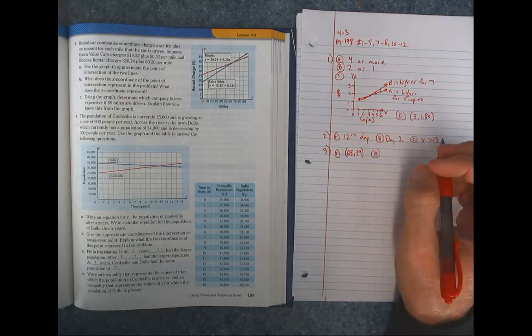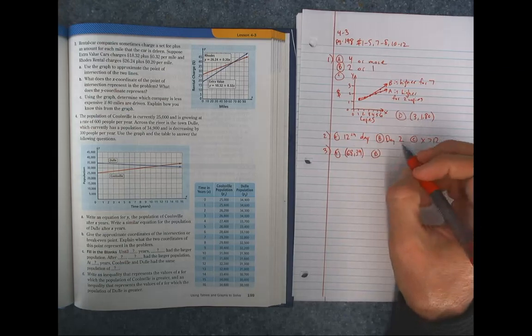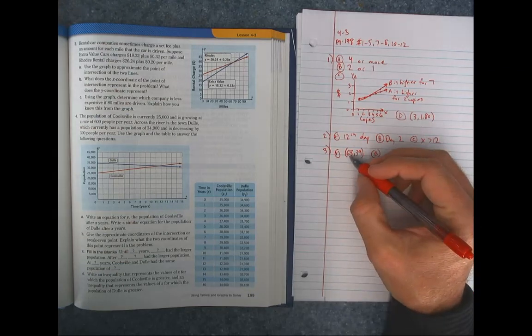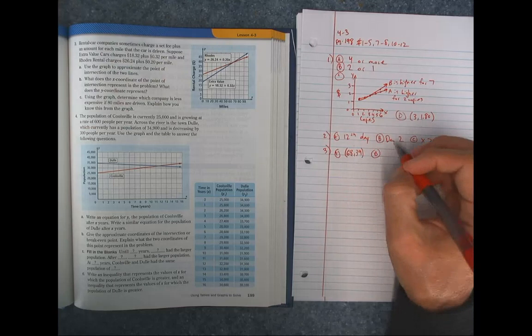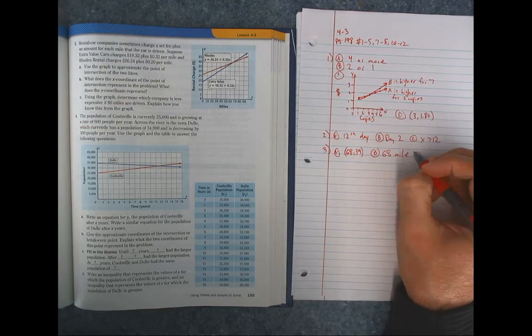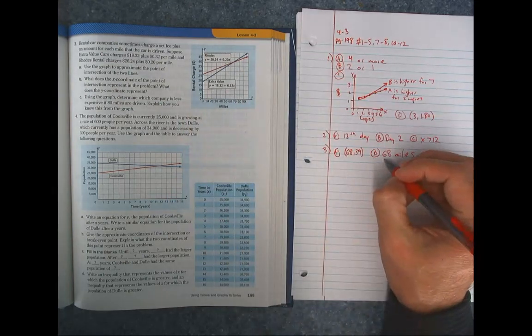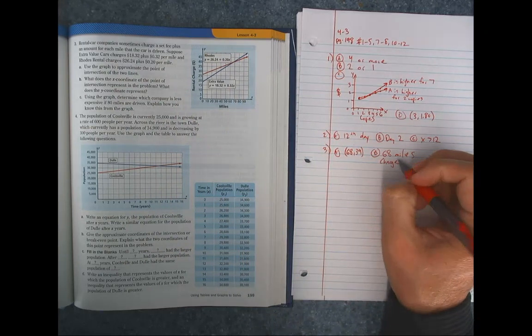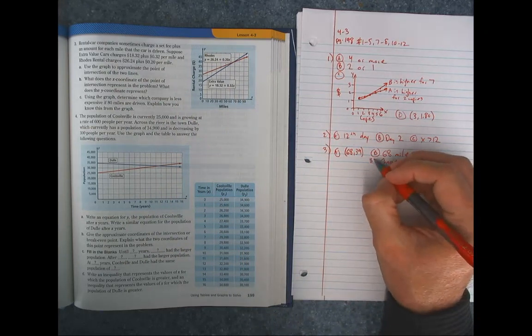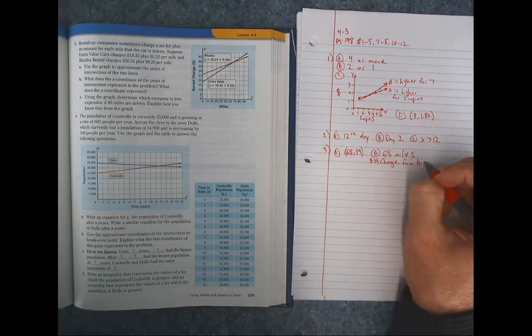Letter B, what does the x-coordinate of the point of intersection represent in the problem? So there's 68, basically. Can you explain that? So 68 is the number of miles. And what does the y-coordinate represent? That's the charge, so a $39 charge from the company. So just explaining those numbers.